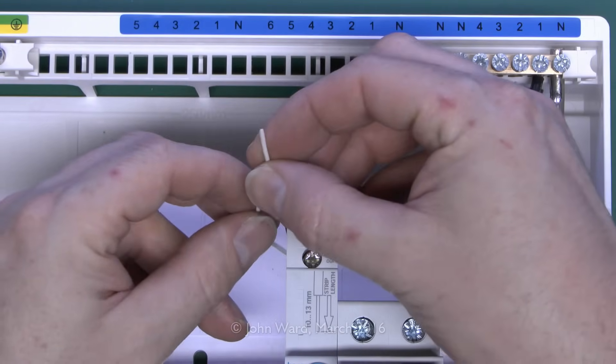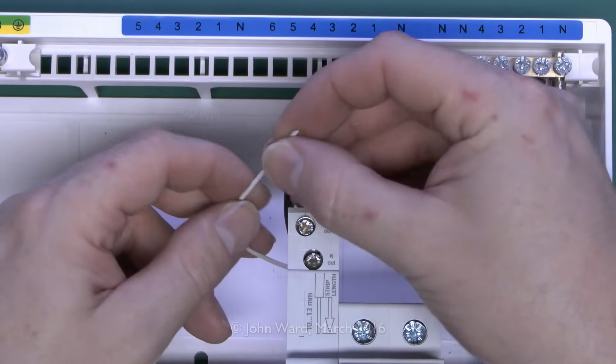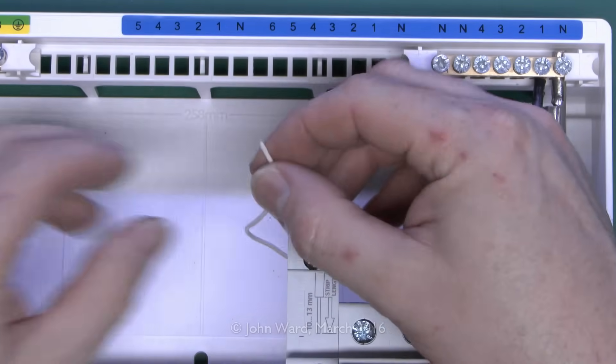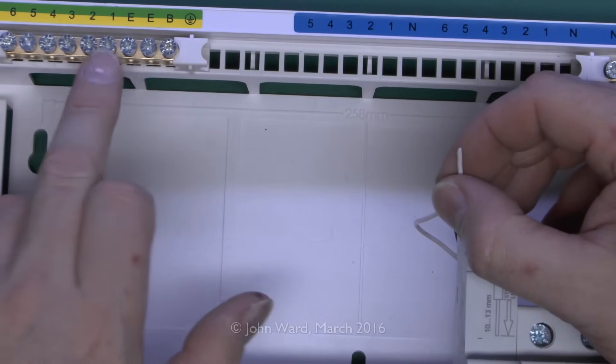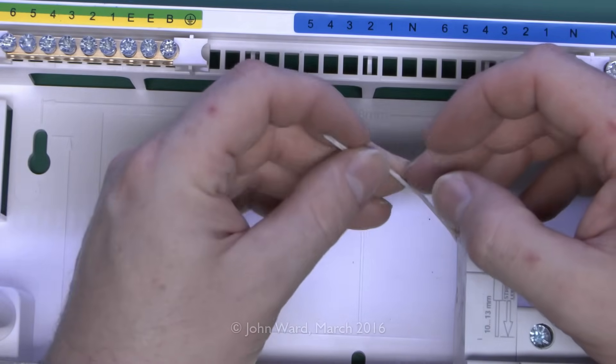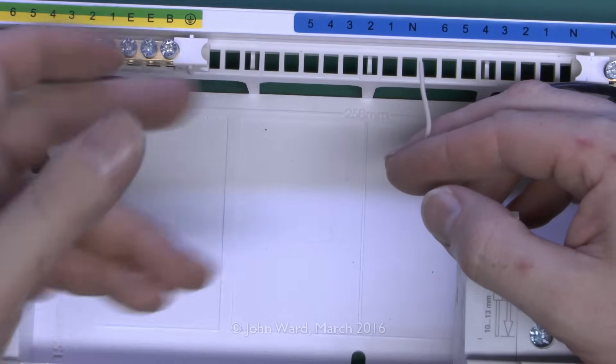The other thing to remember is that if it has one of these functional earthing leads here which is either white or cream colour then you just need to connect these over to the earthing bar here at the top. Unfortunately this one this has been cut off as it's been removed from an old installation but normally they're plenty long enough to reach to the bar over there.